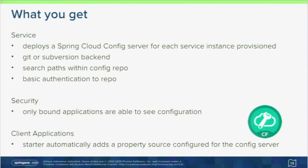Everything in Spring Cloud is about an abstraction layer with implementations underneath. Spring Cloud provides the config server abstraction layer with Git and Subversion implementations. As more implementations get added to the open source project, we'll pull those into this product. The Subversion implementation wasn't written by the Spring Cloud maintainers — it was contributed by someone who needed it. If somebody has a need for another backend, write it, contribute it to open source, and as soon as it's available we can pull it into this product.